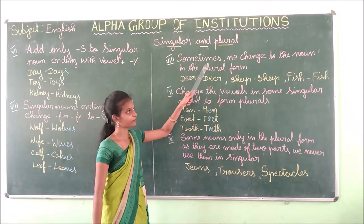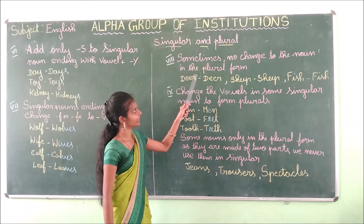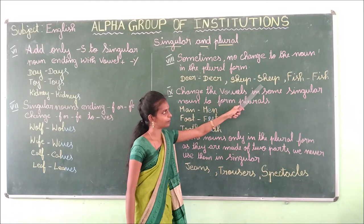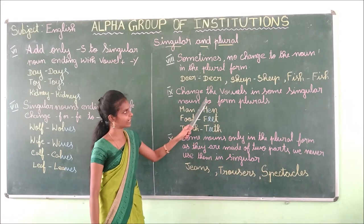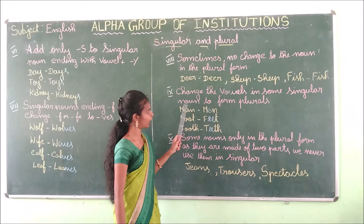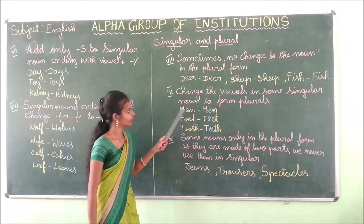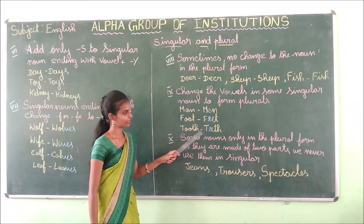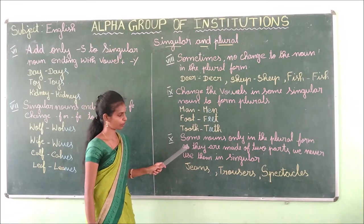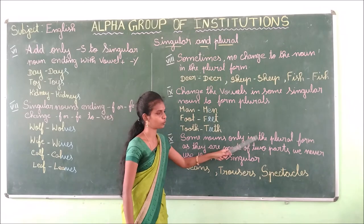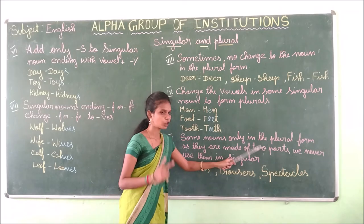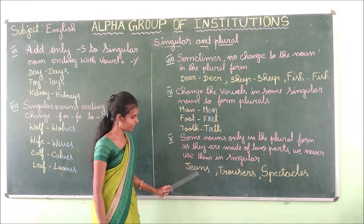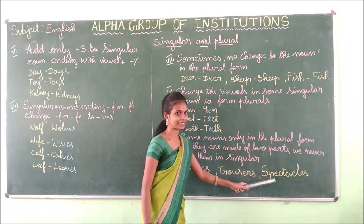Sometimes no change in plural form: sheep→sheep, fish→fish. Change the vowel in some singular nouns to form plurals: man→men, foot→feet, tooth→teeth. Some nouns only in plural form as they are made of two parts — never used in singular: jeans, trousers, spectacles.